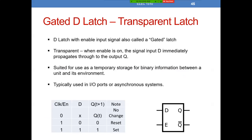The gated D latch is sometimes referred to as a transparent latch, simply because whatever's sitting on D flows through to Q. So sometimes you'll hear this referred to as the transparent latch. A D latch with an enable is also called a gated latch — we usually call it a gated D latch. What you'll always want to know is your inputs to drive it, know its behavior, and be able to derive the characteristic equation, or remember it.